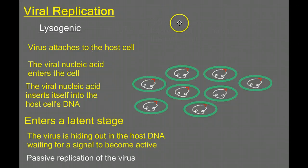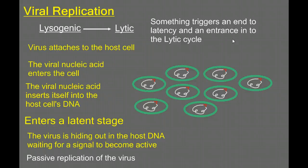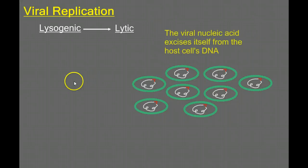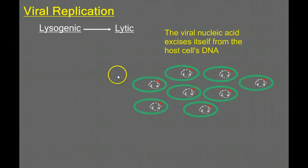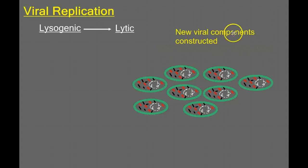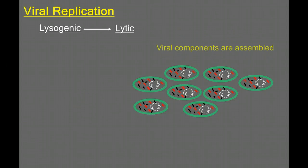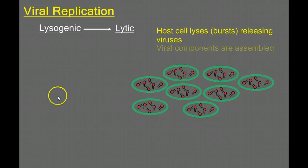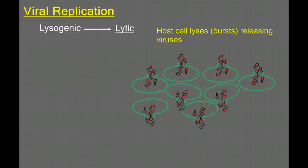At some point, this latency stage has to end. There will be some trigger that causes these viruses to enter the lytic cycle. The viral DNA will excise itself from the host DNA, and then it will start directing the cell to compose viral components. We're building our virus parts, then assembling them into new viruses. After we have all those new viruses assembled, the host cells — in this case plural — will lyse to release those viruses to infect more cells.